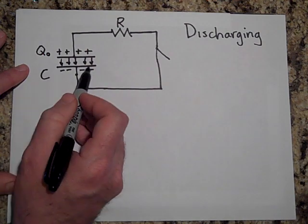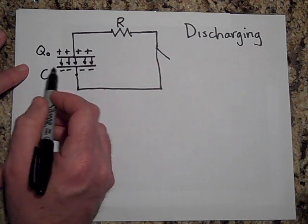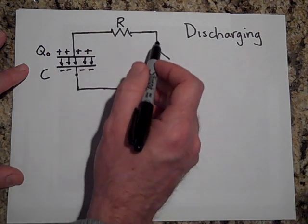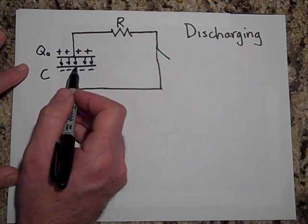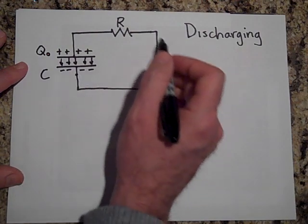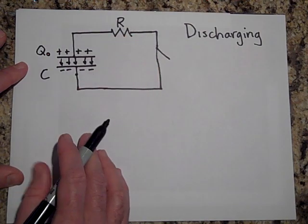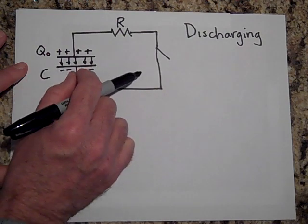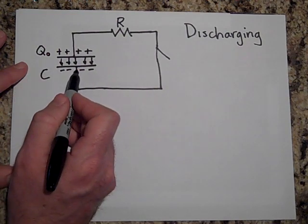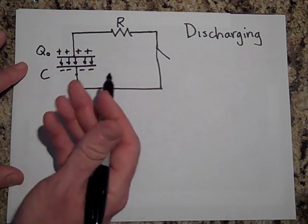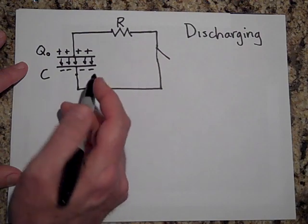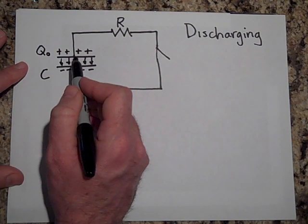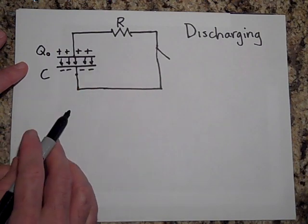And same thing with the capacitance. The bigger the capacitance is, the less of a hurry it's going to be to go around to the other side. So if this is a little capacitor with the same charge, those electrons are under a very high pressure situation where they want to get out of there — so they fly around and discharge it faster.